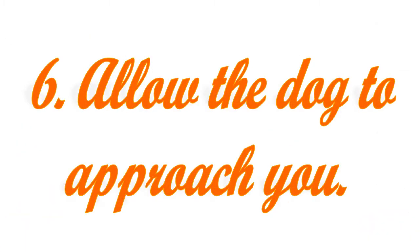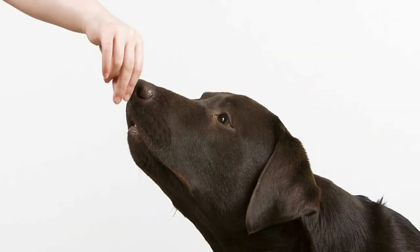Allow the dog to approach you. Once you have gotten close, allow the dog to come to you. You might be able to get the dog to come to you by calling to it in a soothing voice and putting out your hand. If it shows interest such as by wagging its tail, gently pat the ground in front of you. You can also offer the dog strong-smelling food such as tuna or canned dog food to lure it closer. Hold out your hand palm down — this is less threatening to most animals and also lessens the chances of your fingers being bitten.